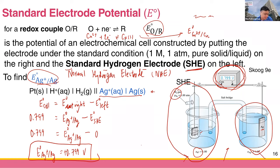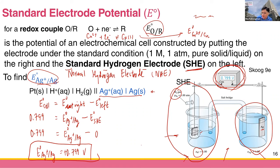Any questions? Someone asks: why is SHE equal to zero? That's by definition. Every electrode has its own potential, but we want to compare things, so we need to set a reference. Electrochemists decided to say that the SHE has electrode potential of zero — by definition, not by nature. We just defined it that way.